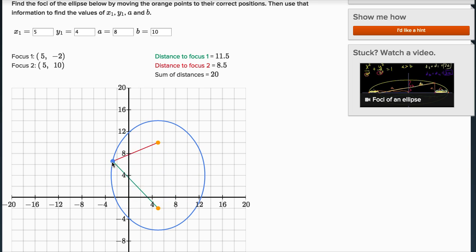Look, I can go anywhere around here, and the sum of these two distances, of the green and the red line, their lengths, is a constant 20. That's actually what defines an ellipse.